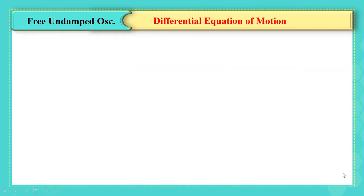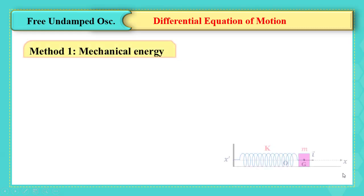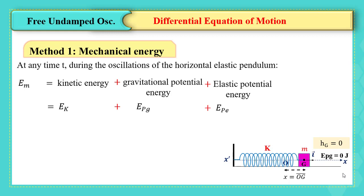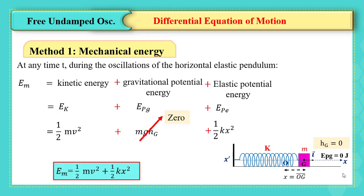We have two methods to find the differential equation. Method 1: Consider the horizontal elastic pendulum where the horizontal plane passing through the center of mass G is taken as the reference of gravitational potential energy. Then the height of G is zero, and x is the elongation of the spring at instant t. We benefit from conservation of mechanical energy, writing its expression at any time when abscissa x and velocity v are not zero. Avoid the two extreme positions and the equilibrium position. Then mechanical energy equals kinetic plus gravitational potential energy plus elastic potential energy. Since gravitational PE is zero, mechanical energy is written as ½mv² + ½kx².